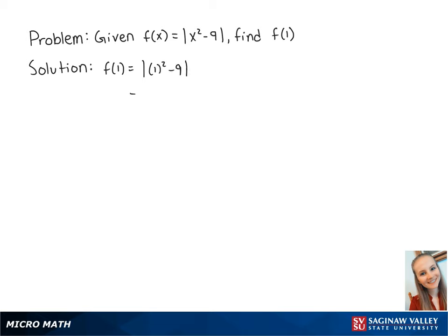Which is equal to the absolute value of 1 minus 9, which is equal to the absolute value of negative 8. When there's a negative number with an absolute value, it becomes positive. So this is equal to positive 8, and this is the final answer.